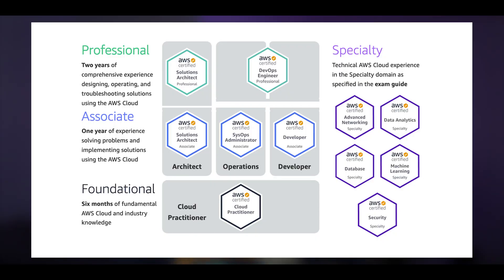The Specialty certifications really are for if you are specialized in a certain field, or would like to specialize in one. You can take these at any time. I don't have a strong recommendation of taking a Professional first or a Specialty first. But I would recommend starting with the Solutions Architect Associate, and once you have that, either go horizontally — learning about development and SysOps administration — or pick a Specialty if there's a topic that interests you, or dive really deep into the Solutions Architect Professional, or go down the route of DevOps Engineering Professional.